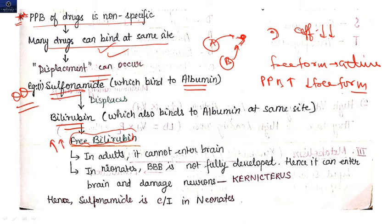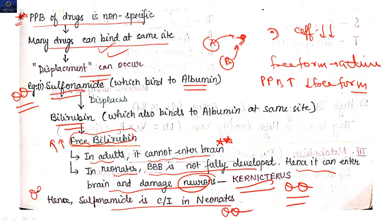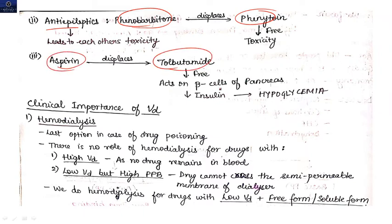In adults, free bilirubin cannot cross the blood-brain barrier, so no neurological side effect occurs. But in neonates, whose blood-brain barrier is not fully developed, free bilirubin enters the brain and damages neurons — this condition is known as kernicterus. This is very important and frequently asked. Another example: anti-epileptic drugs such as phenobarbital can displace phenytoin from albumin, leading to toxicity of phenytoin.